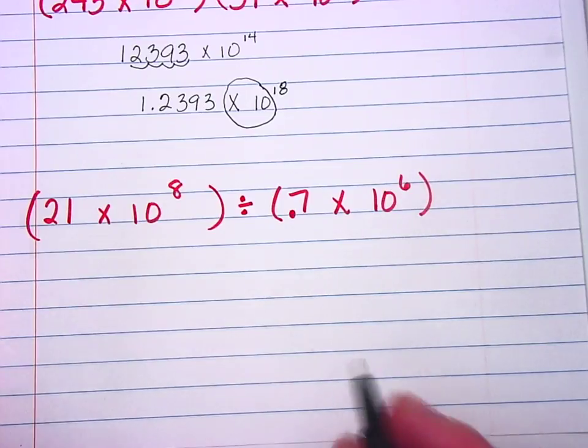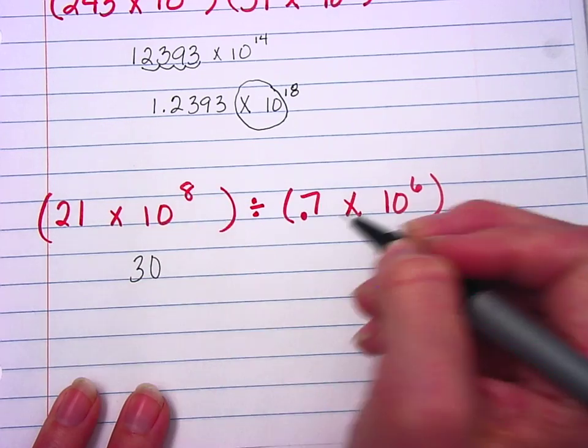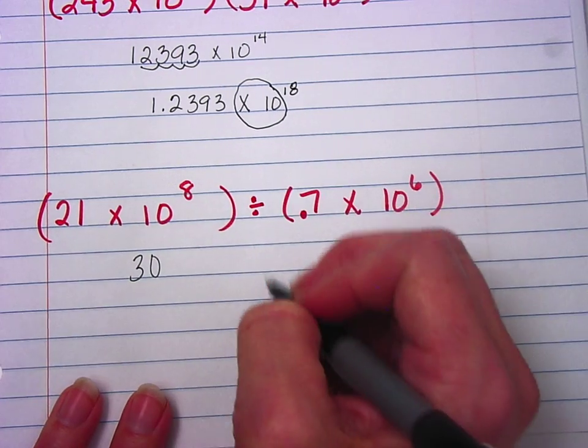I don't know why I'm doing that in my calculator. Alright, then we have 30 times 10 to the power of 8 and 6 again.